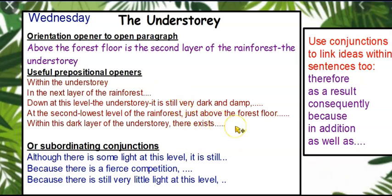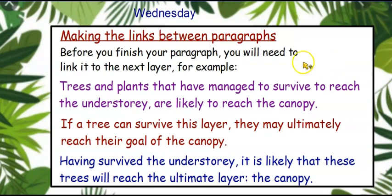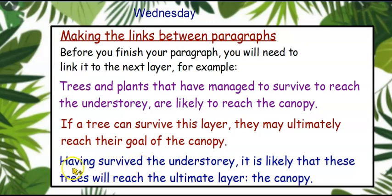It's a really good idea to start with a prepositional opener because you're talking about the next layer and where that is. There are lots of sentence ideas here for linking ideas — your conjunctions — have a look at those. Before you finish your paragraph, remember you've got to make a link to the next layer up, which is the canopy. There are three modelled sentences you can magpie: 'Trees and plants that have managed to survive to reach the understory are likely to reach the canopy.' Or a conditional: 'If a tree can survive this layer, they may ultimately reach their goal of the canopy.' Or: 'Having survived the understory, it is likely that these trees will reach the ultimate layer: the canopy.'